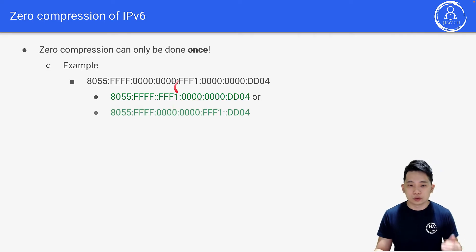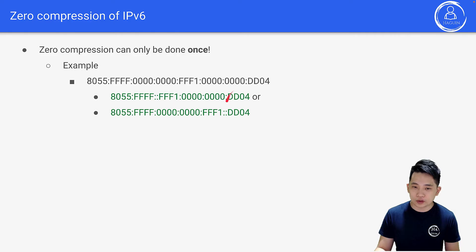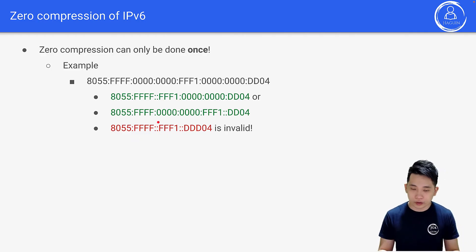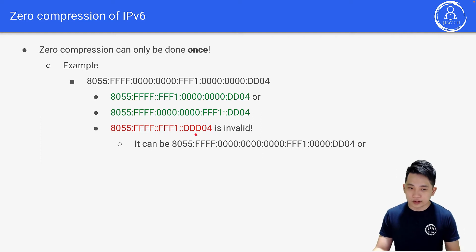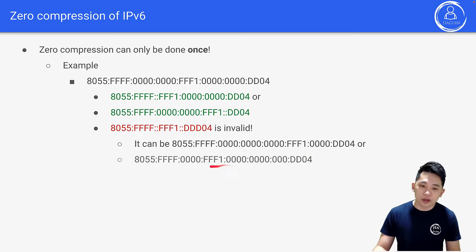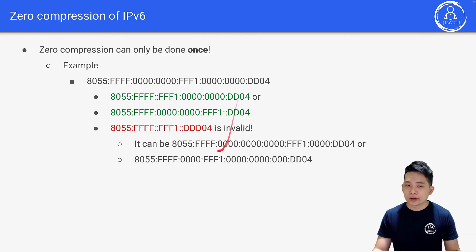Alternatively, you can keep the zeros at the front and replace the zeros at the back with a double colon. Now let's look at an invalid form: you cannot remove all zeros from both groups using a double colon twice. For example, an ambiguous compression could be misread as three zeros at the front and one at the end, or one zero at the front and three at the end. That's why zero compression can only be applied once.